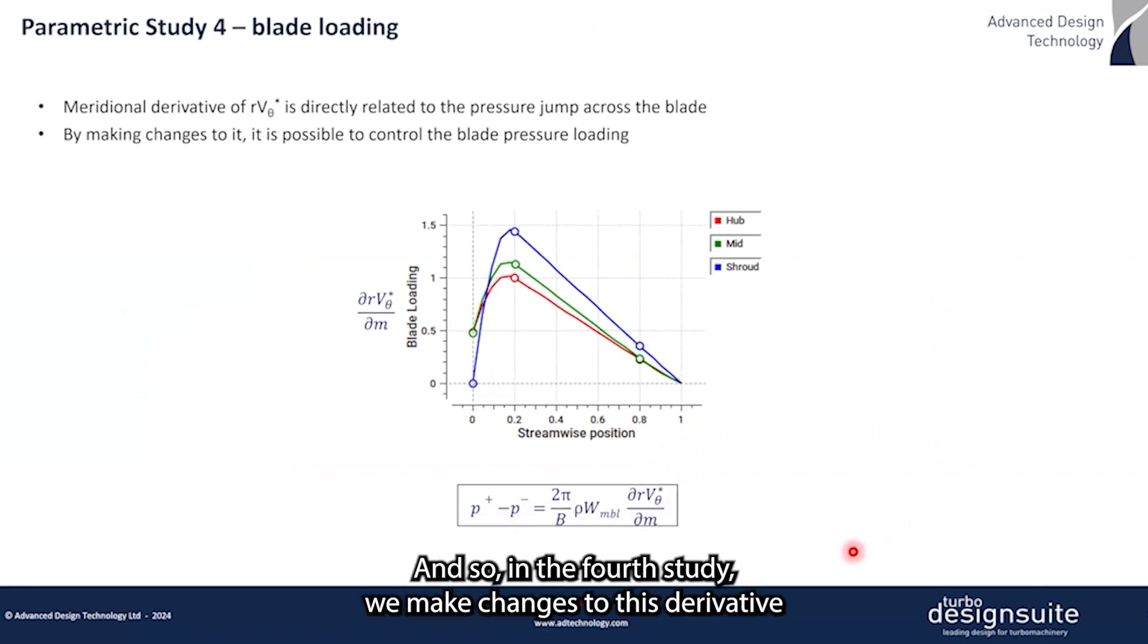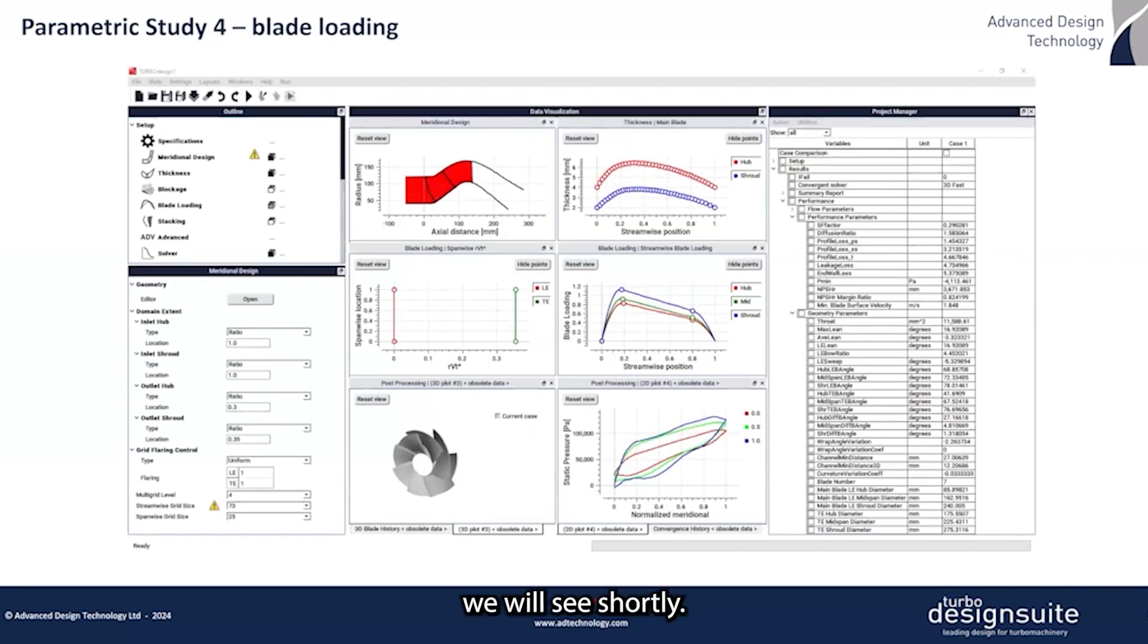In the fourth study, we make changes to this derivative, and in this way we directly control the changes to the blade loading. This is also very easily done in TD1, as we will see shortly.